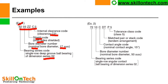Example 2: bearing 7210C DT P5. '72' is the bearing series code for a single row angular contact ball bearing of dimension series 2. '10' gives the bore diameter — nominal bore diameter 50 mm (10 × 5). 'C' is the contact angle code for nominal contact angle. 'DT' is the matched pair or stack code for tandem arrangement. 'P5' is the tolerance class code for class 5.